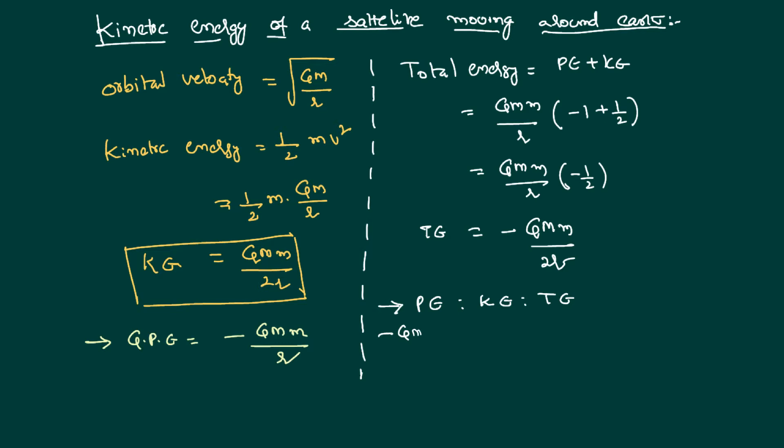Potential energy is minus gmm by r, kinetic energy is gmm by 2r, total energy is minus gmm by 2r. All these gmm terms cancel out. This ratio is minus 1 to 1/2 to minus 1/2, or if you multiply by 2, it becomes minus 2 to 1 to minus 1.